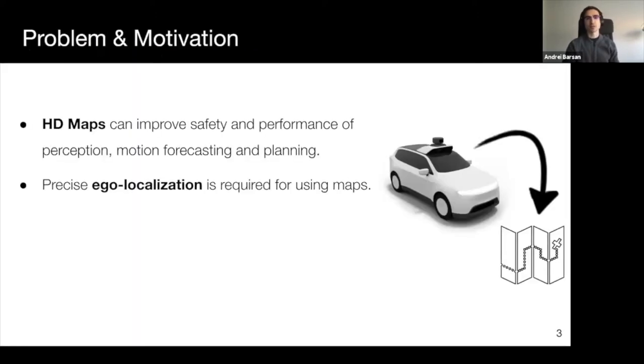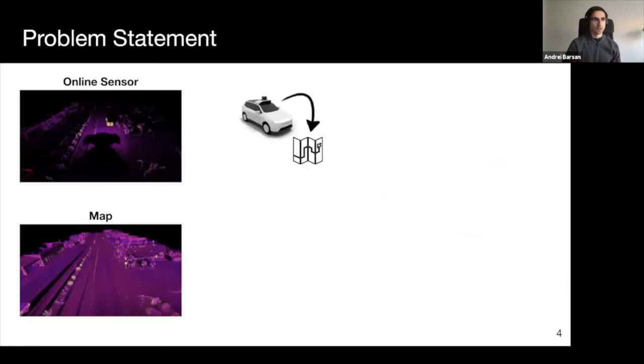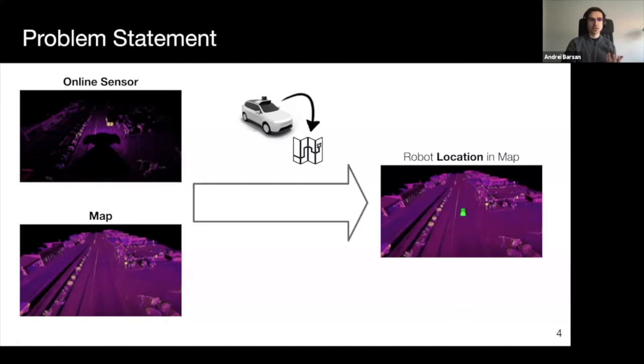Self-driving cars are one of the most complex and safety critical applications of robotics. Leveraging rich maps can enhance performance and safety in areas such as perception, motion forecasting, and motion planning. However, in order to leverage these HD maps, we must know our own ego position within these maps. This is the task that is solved by localization.